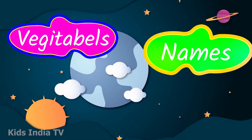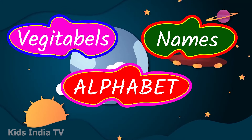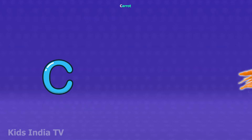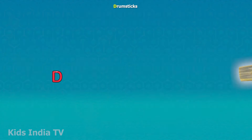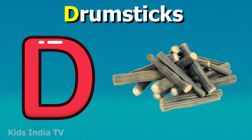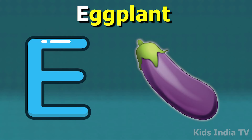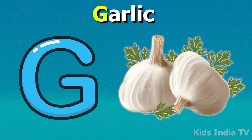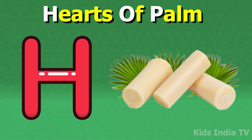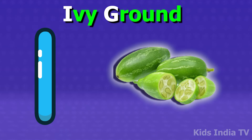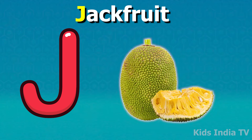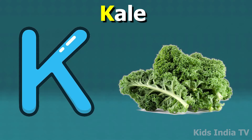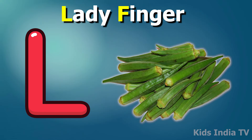Vegetable names according to alphabets: A for Ash Gourd, B for Broccoli, C for Carrot, D for Drumstick, E for Eggplant, F for Fenugreek, G for Garlic, H for Heart of Palm, I for Ivy Gourd, J for Jackfruit, K for Kale, L for Ladyfinger.